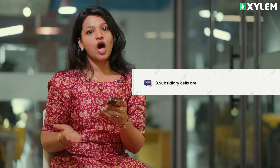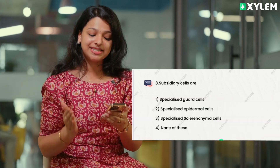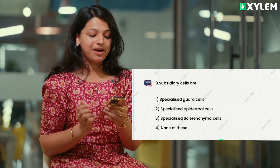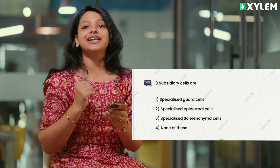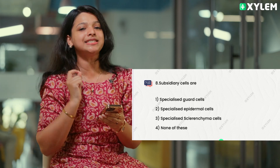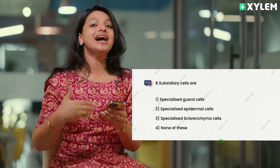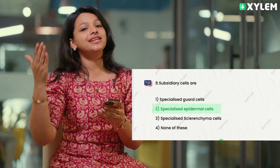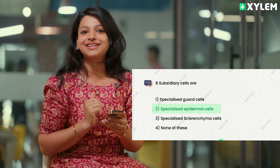We are learning the concept of stomata in plants. We need to take a look at MCQs. There is a question about subsidiary cells. The options are: specialized guard cells, specialized epidermal cells, specialized clear and dry muscles, none of these. The correct option is subsidiary cells are specialized epidermal cells, as stomata and little guard cells are covered by epidermal cells.